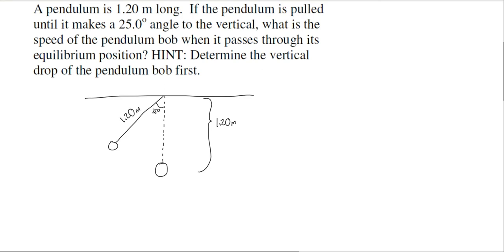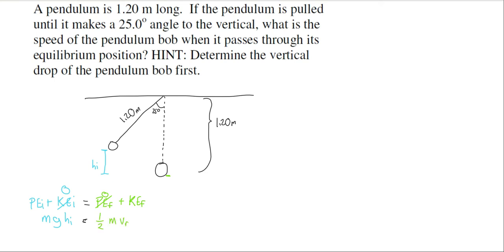If I consider my initial situation where I'm starting, there's some potential energy and some kinetic energy. But we established the kinetic energy is zero, so we find potential energy as mass times g times the initial height. Then at the bottom, the final potential energy is zero, and there's kinetic energy: one half times the mass times the final velocity squared.